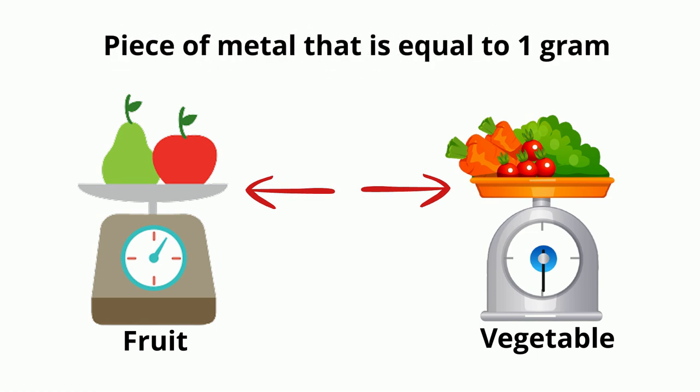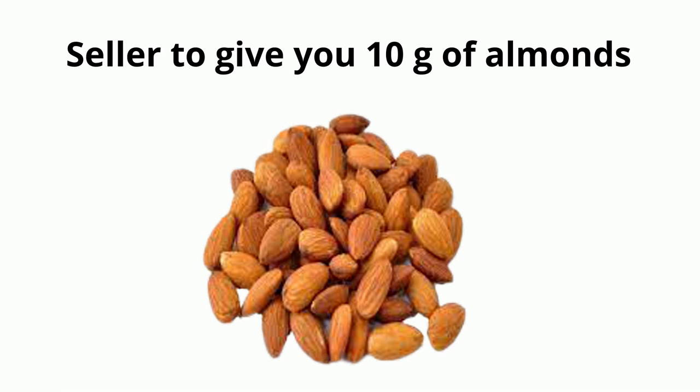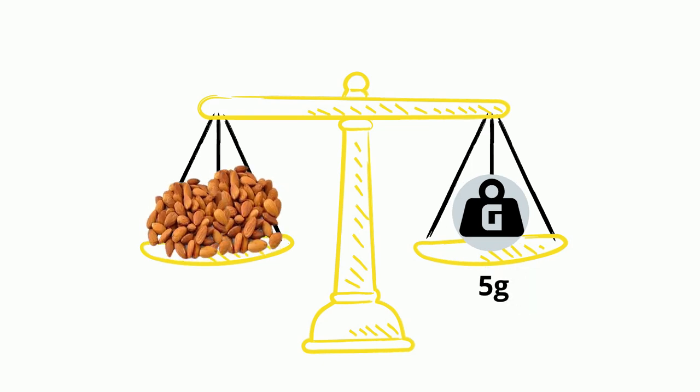Now if you ask the seller to give you 100 grams of almonds, he will put a rock or metal in one pan and start placing almonds in the other pan. As soon as both pans are balanced, he will stop placing more almonds and give you the almonds that are in the pan. Since the scale was balanced, it means the almonds are equal to 100 grams.